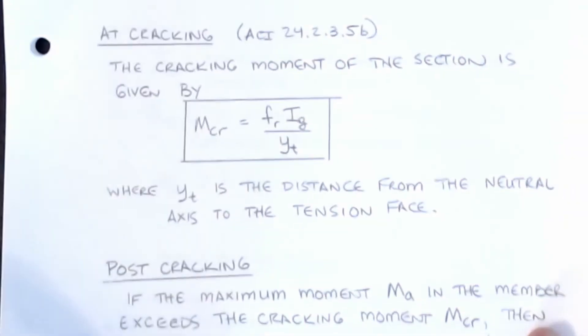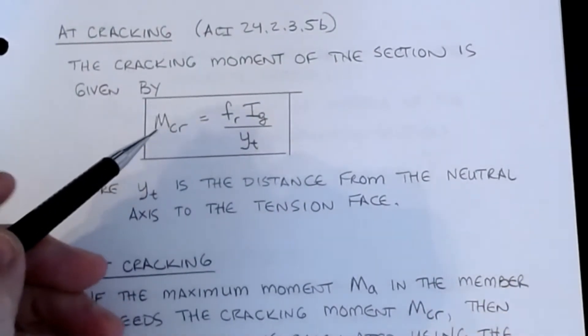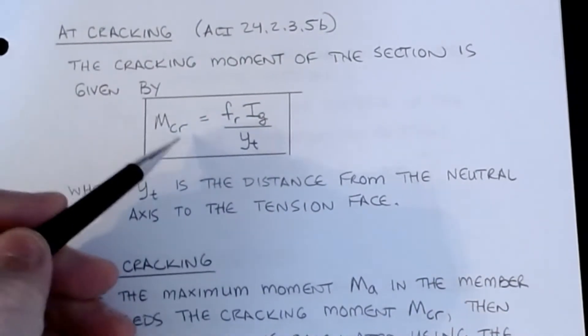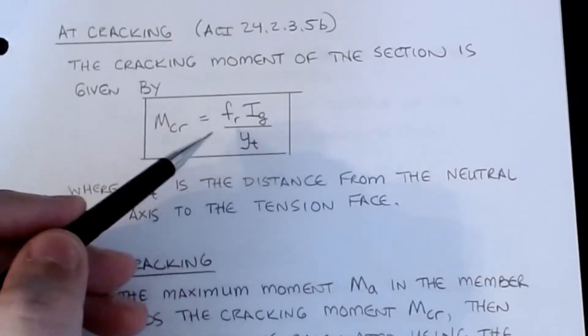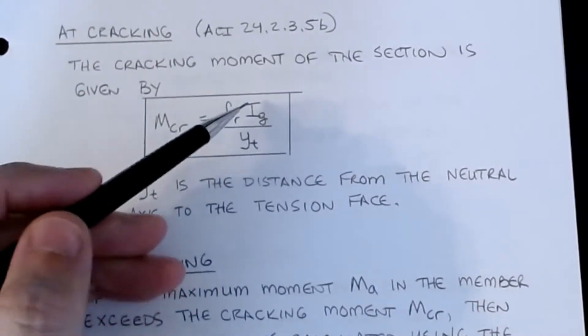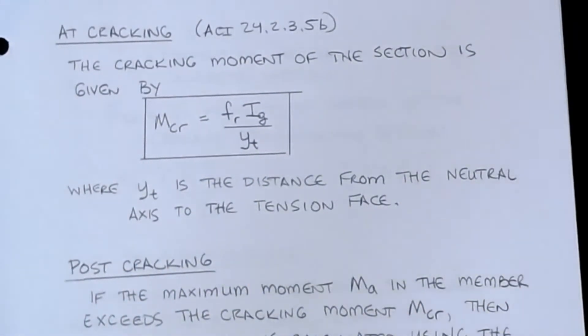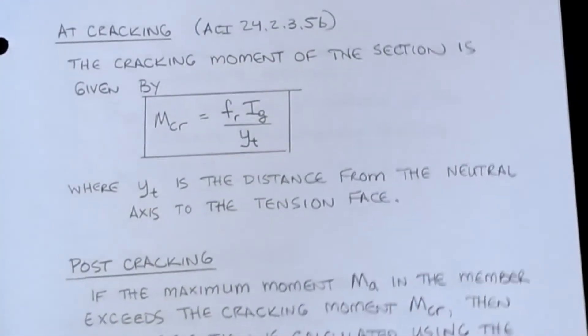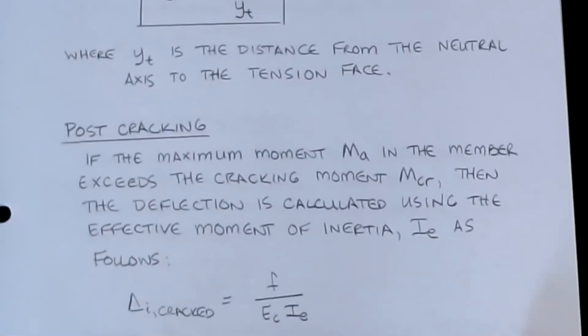Now at cracking, what happens is we know that the stress and the cracking moment of the section, we can compute that by rearranging our stress formula in which the cracking moment at the critical section is FR times IG divided by YT, where YT is the distance from the neutral axis to the tension face. IG is that gross section. And so this is right at the point where it starts to crack. You're still using an I gross. Once it cracks, now your I changes because again, we neglect tension and strength. And so your section is starting to become damaged.